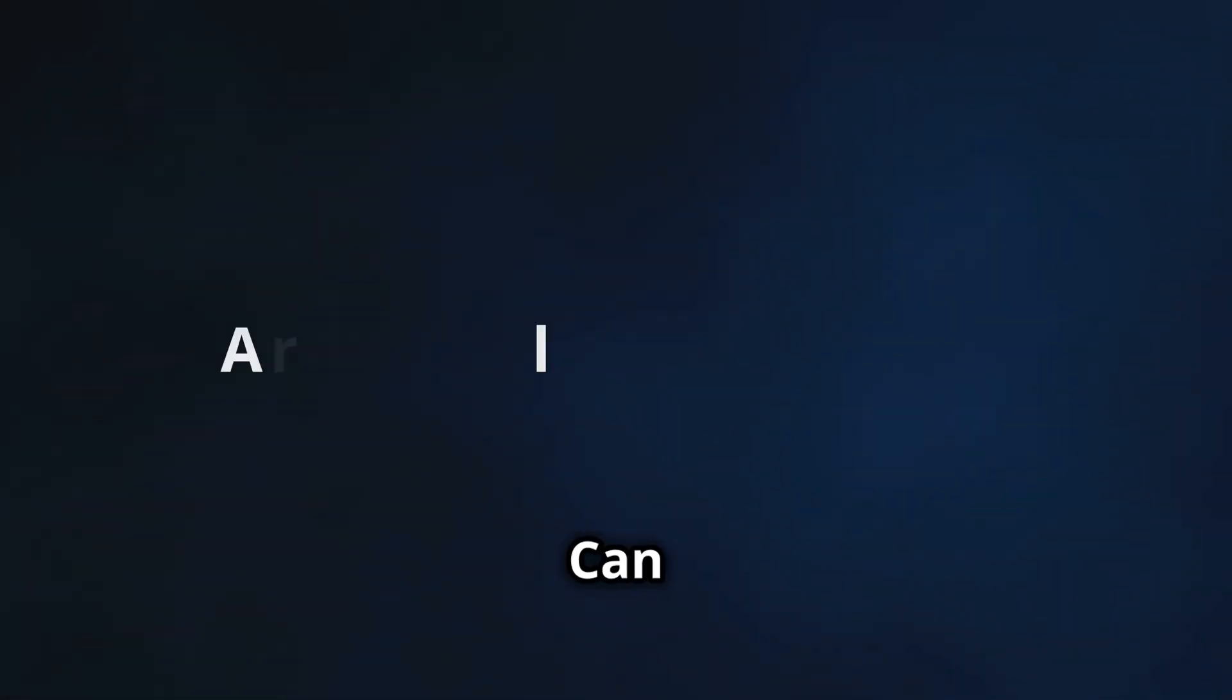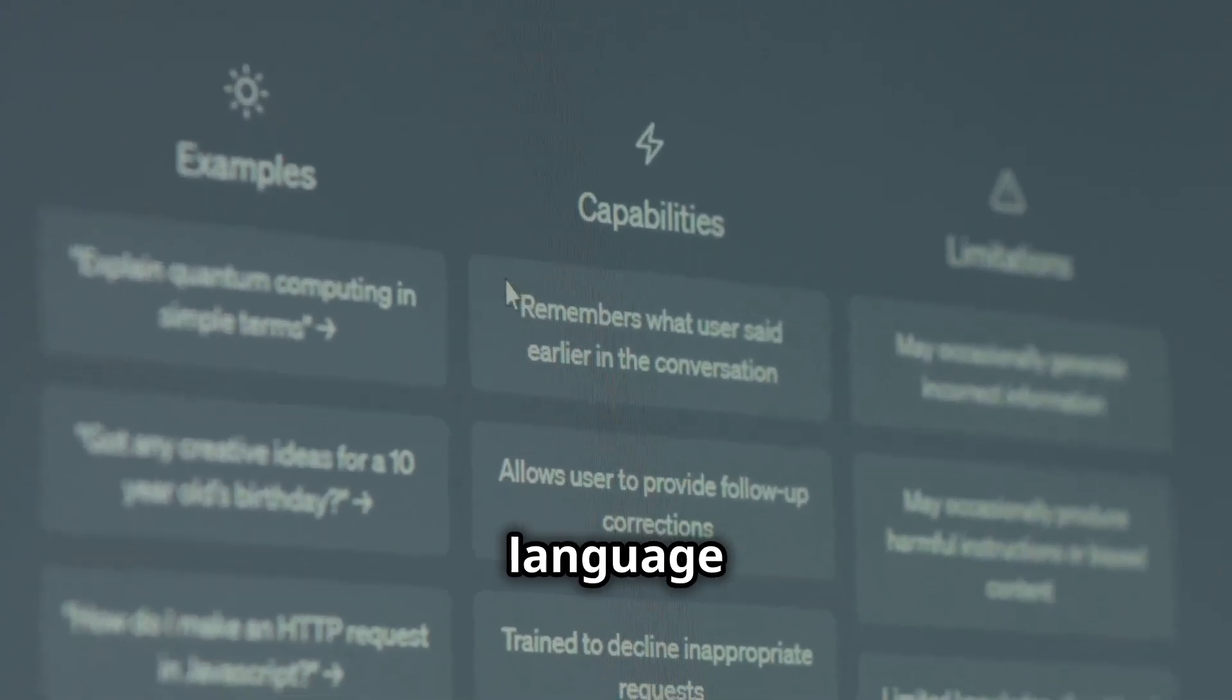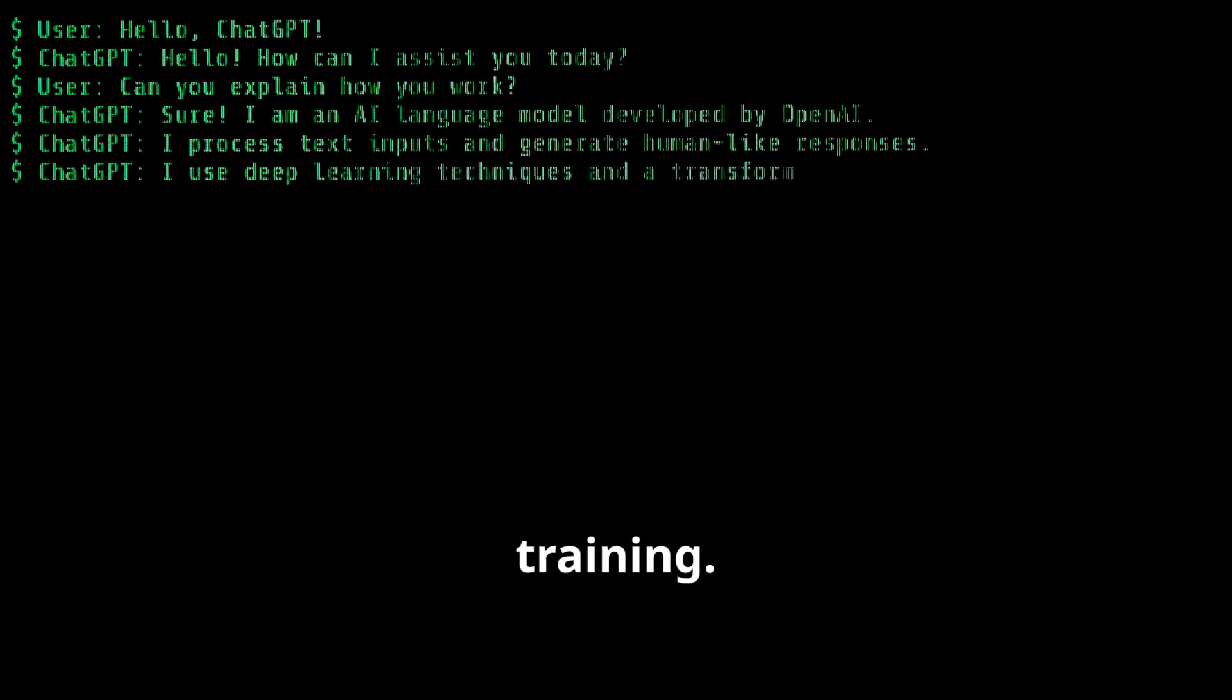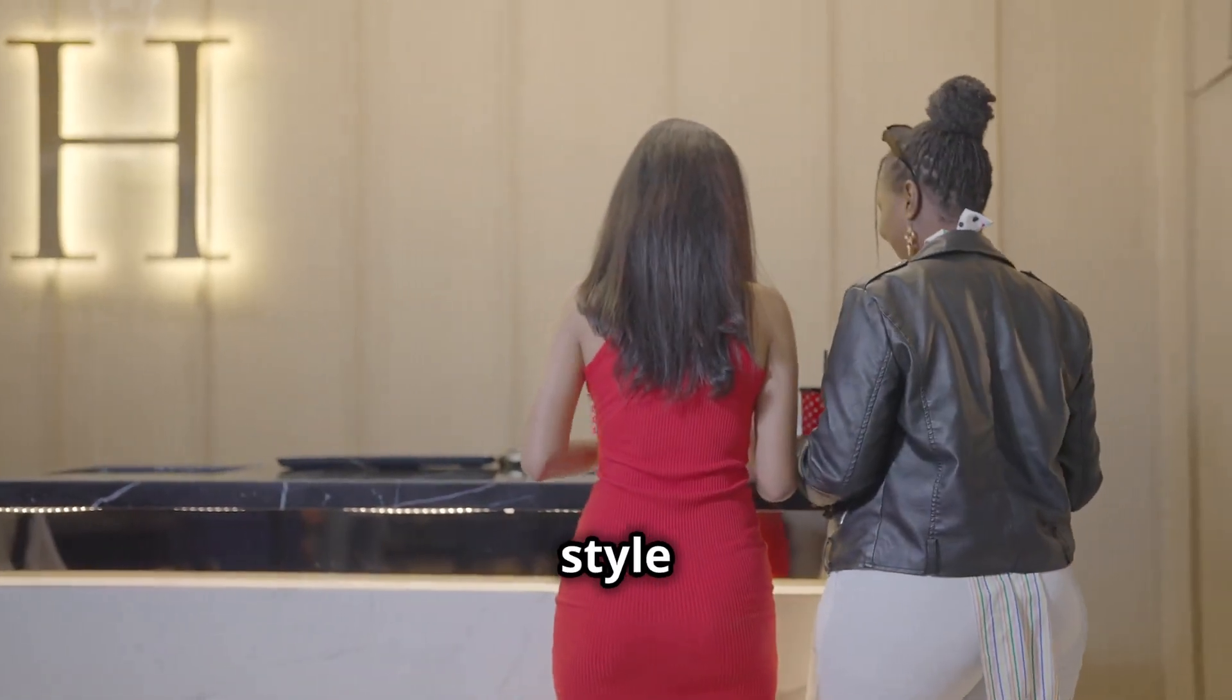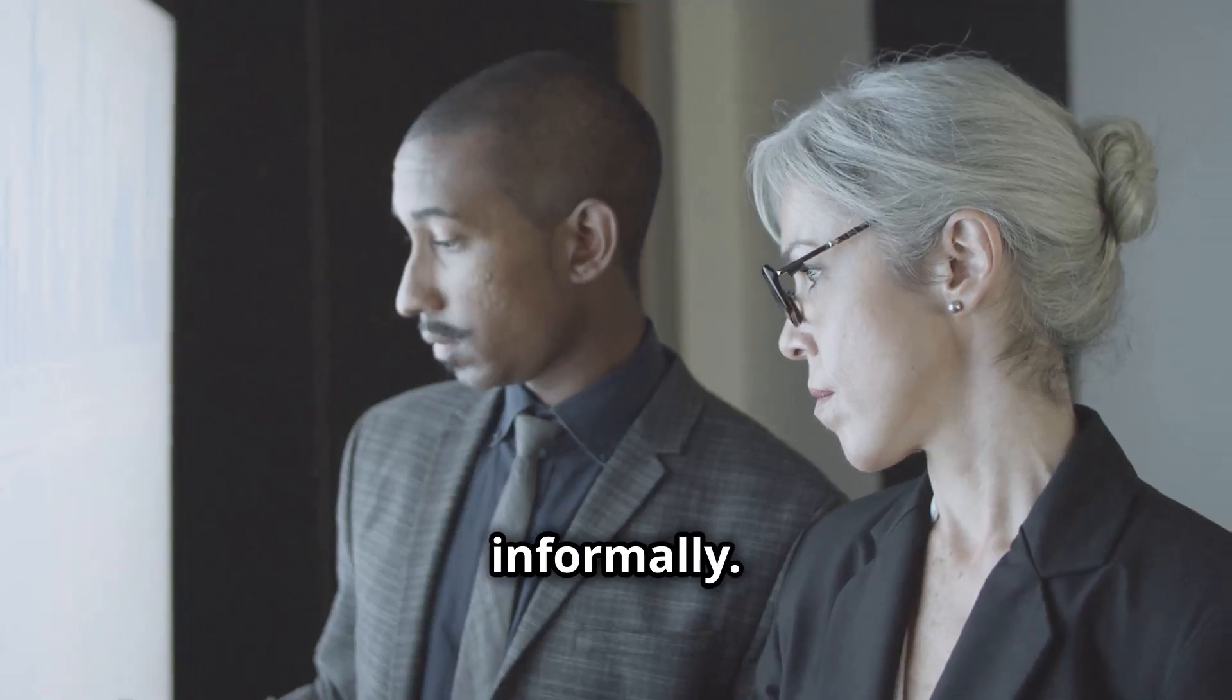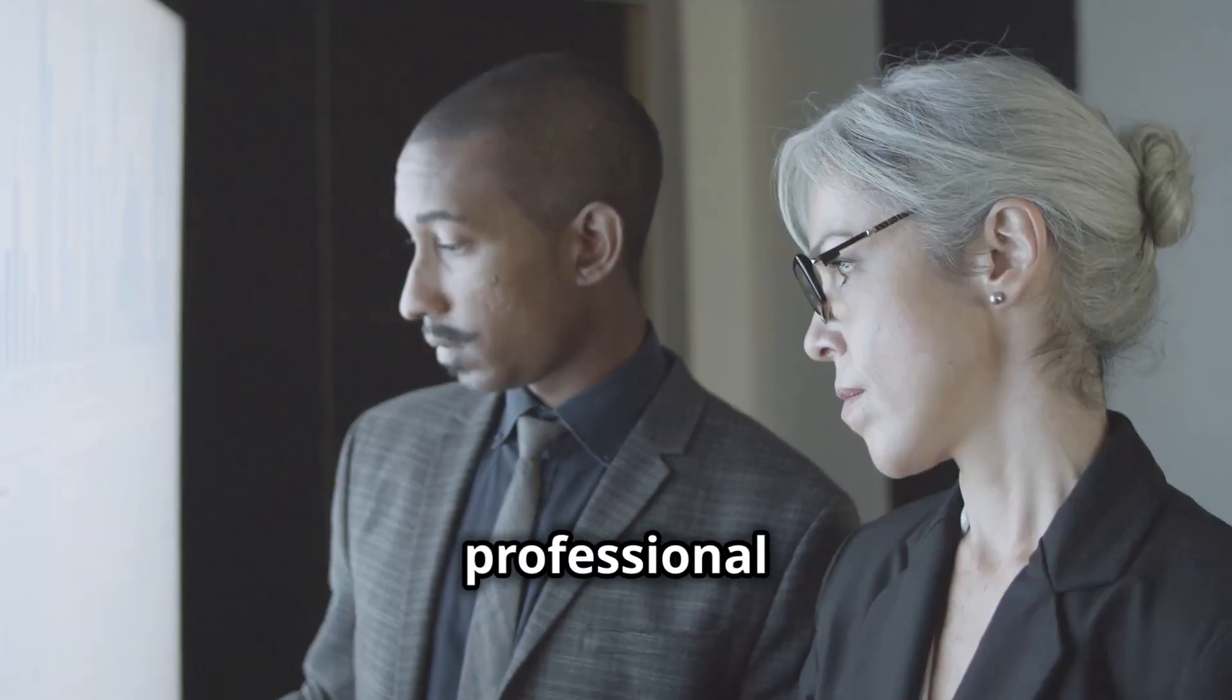Five, why ChatGPT can feel so human. ChatGPT feels human-like because of how it processes language. One, probabilities and patterns. Instead of having pre-written answers, ChatGPT predicts the most likely word or phrase based on patterns it has seen during training. Two, subtle adjustments. The AI doesn't just stop at giving you the right answer. It adjusts its tone and style based on the way you ask questions. For example, if you ask casually, hey, what's up with quantum physics? It might respond informally. If you ask formally, can you explain quantum physics in detail? It adapts to a more professional tone.